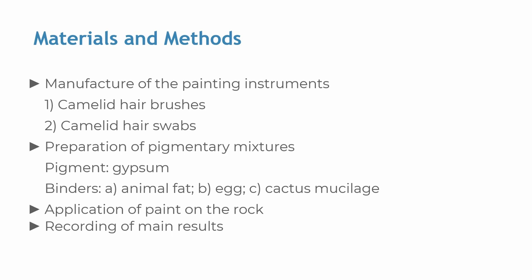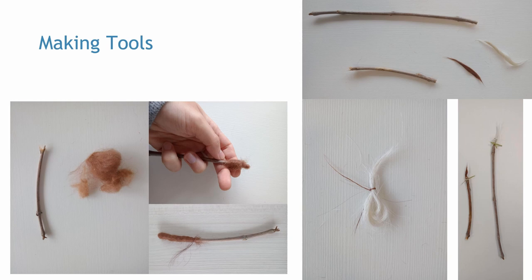Binders, on the other hand, were chosen to represent the main chemical families of natural substances that were possibly employed in painting production. Archaeometric analysis of organic components from the rock paintings of La Candelaria are expected to be carried out soon. Rock with similar characteristics to those supporting paintings were collected during the fieldworks. Then, application tools were manufactured using llama wool and wooden sticks; a few brushes and swabs were fabricated. Wooden sticks were not shaped or treated in any way.